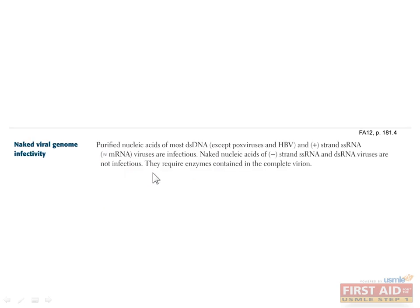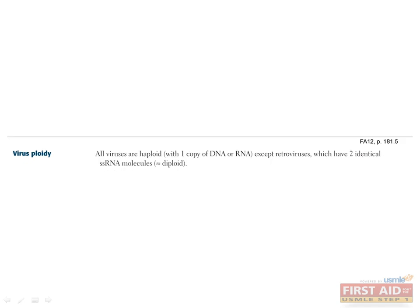The purified nucleic acids of positive single-stranded RNA viruses and most double-stranded DNA viruses are infectious. The exceptions among DNA viruses are pox virus and hepatitis B virus. Naked nucleic acids from negative single-stranded and double-stranded RNA viruses are not infectious on their own. Also note that all viruses are haploid and contain only one copy of DNA or RNA — with the exception of retrovirus, which is diploid because it contains two copies of identical single-stranded RNA molecules.